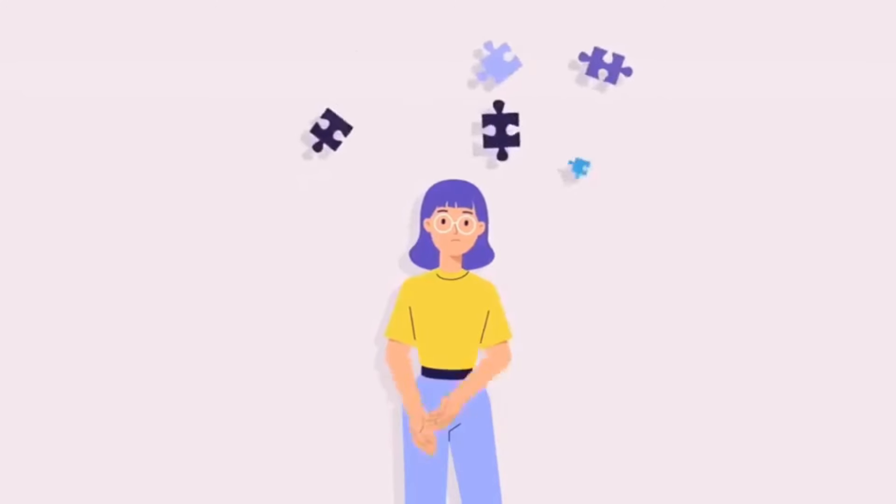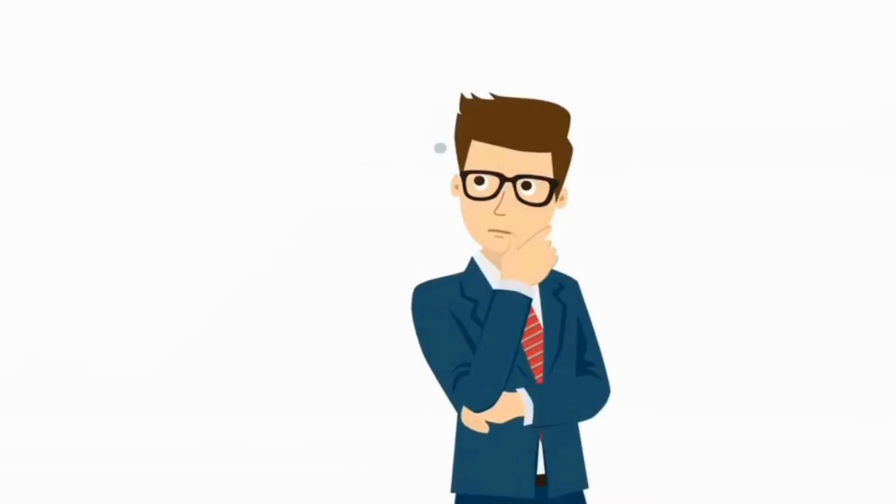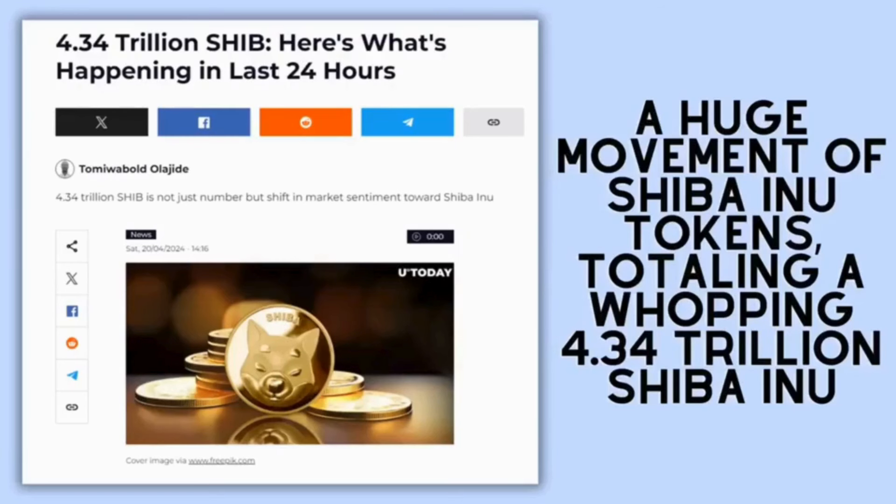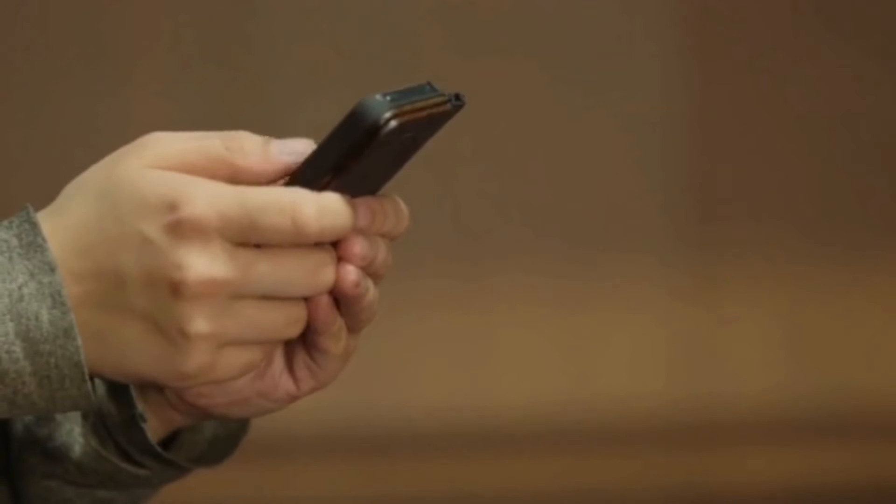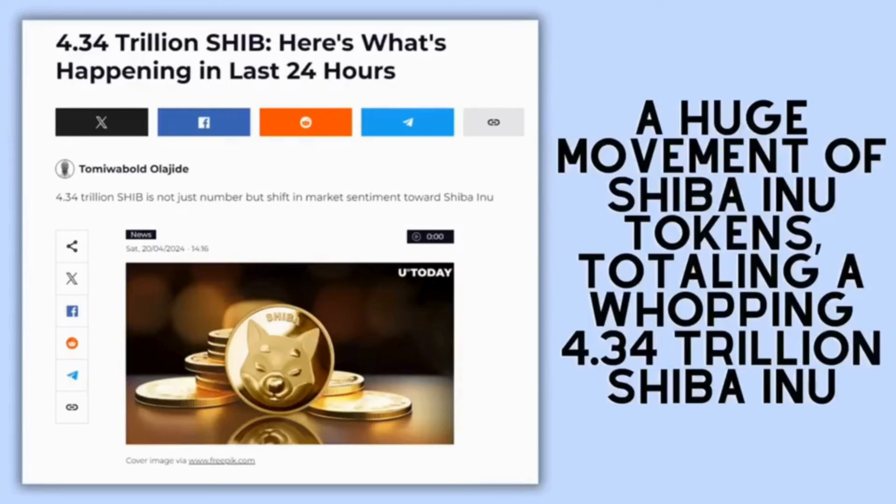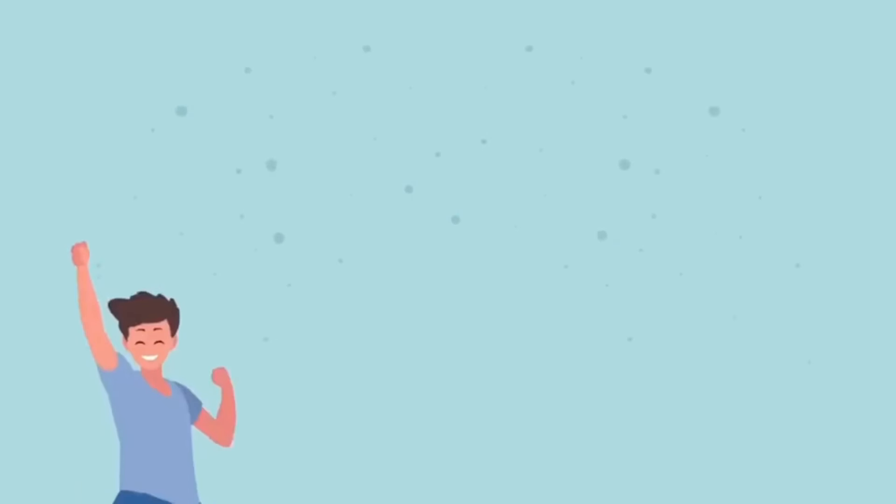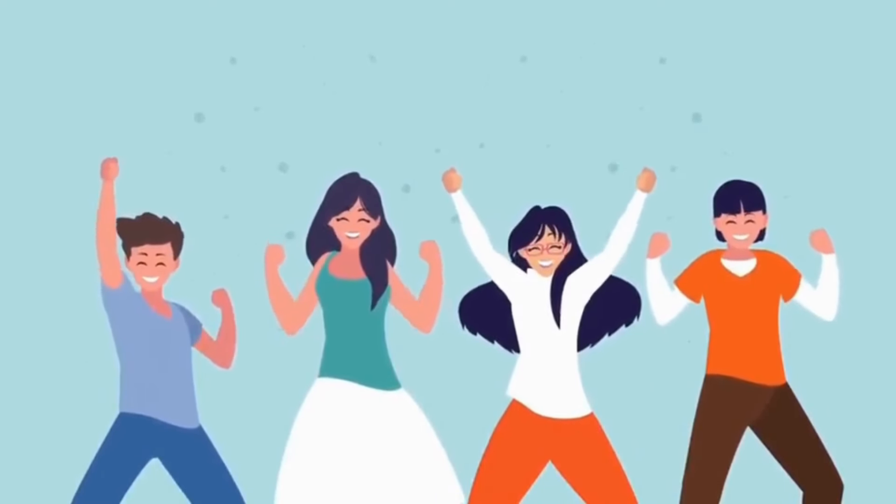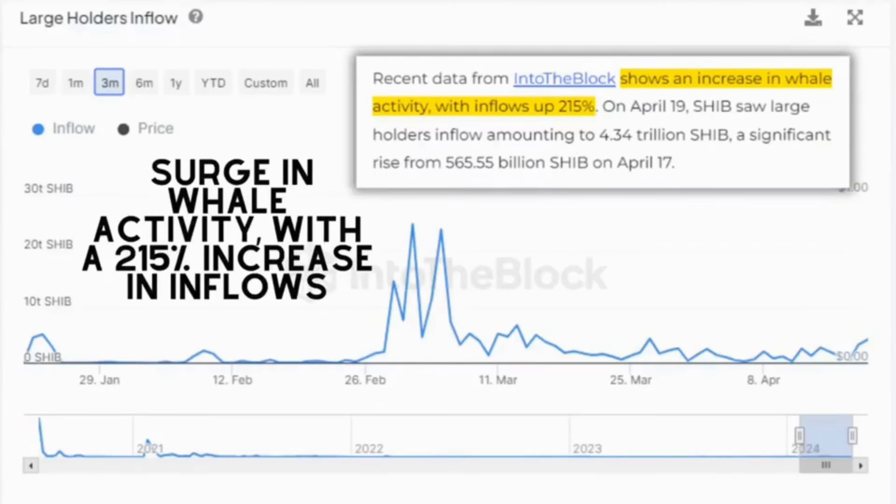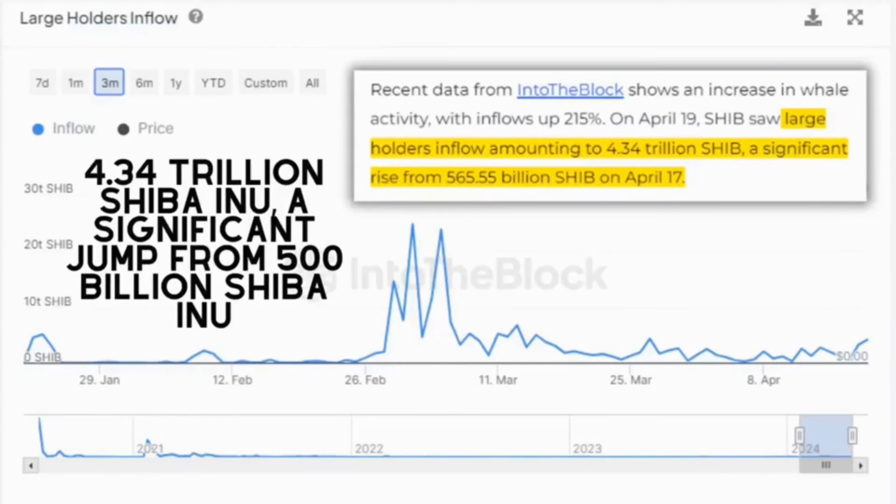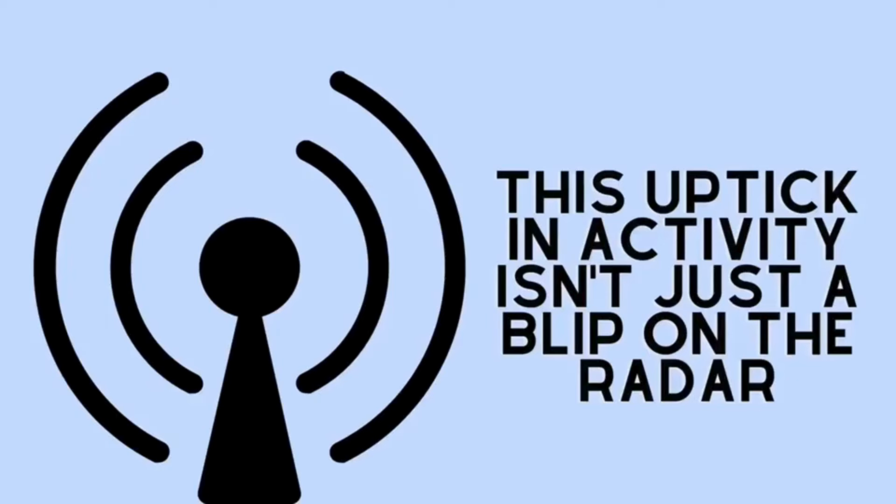But what is going on? Why has Shiba Inu risen that much? What are the factors? And how long will the Shiba Inu run last for? Let's find out. In the last 24 hours, there's been a huge movement of Shiba Inu tokens, totaling a whopping 4.34 trillion Shiba Inu. This surge in large transactions within the Shiba Inu ecosystem has stirred up a lot of speculation and excitement. Recent data from IntotheBlock reveals a surge in whale activity with a 215% increase in inflows. On this day alone, large holders saw an inflow of 4.34 trillion Shiba Inu, a significant jump from 500 billion Shiba Inu just two days prior.